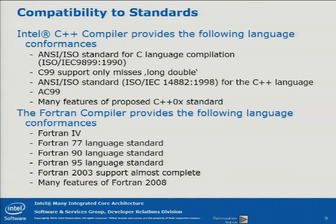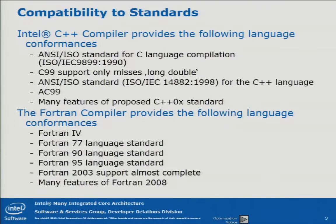That was the marketing part. Compiler generics: most people are interested in what the compiler actually accepts as source code. Basically we support almost the new standards — we have full C++11 compatibility, C99 compatibility, and Fortran-wise we support anything up to Fortran 2003 with minor exceptions. We already support a good share of features of Fortran 2008 and are still working on it. It's kind of embarrassing that 10 years after Fortran 2003 was released, there are only two compilers out there that fully support it — Cray and IBM, I think. We are lacking two features, but we are working on it.